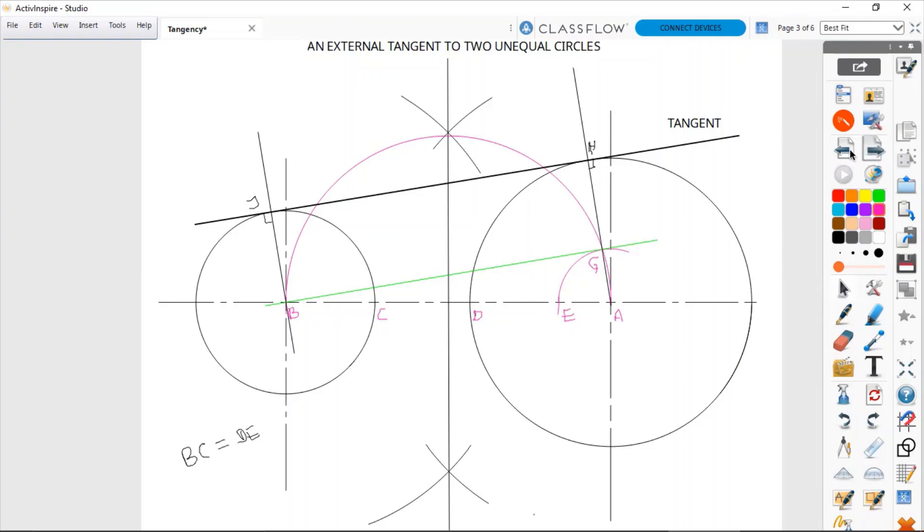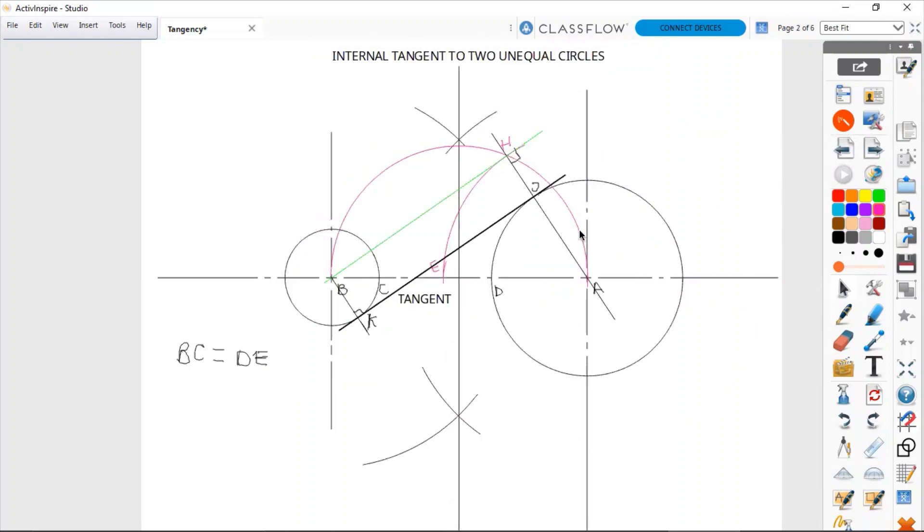And then in another case, which is this one, we drew an internal tangent to two unequal circles. Let's look at the relationship between these two.